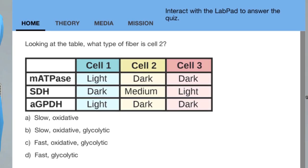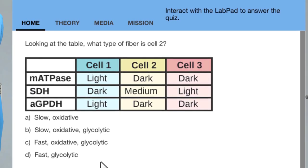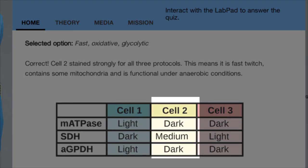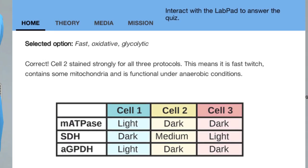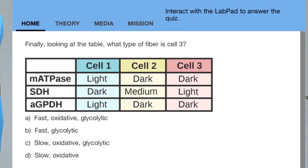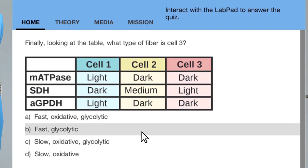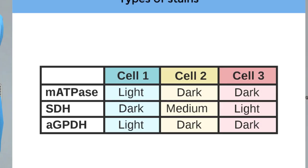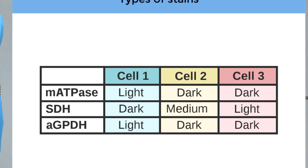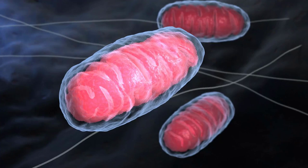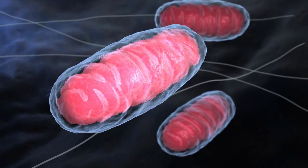Looking at the table, what type of fiber is cell 2? Correct, cell 2 stained strongly for all three protocols. This means it is fast-twitch, contains some mitochondria and is functional under anaerobic conditions. Finally, looking at the table, what type of fiber is cell 3? You've got this, cell 3 stained for both myosin ATPase and AGDPH, meaning it can convert ATP and work under anaerobic conditions well. However, it didn't stain much for SDH, meaning there are fewer mitochondria and it is non-oxidative. Great, now that you know how to analyze the assays, it's time to do some myosin ATPase staining of the soleus and EDL muscles you dissected and turned into thin sections.